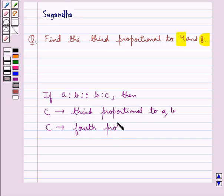Also, C would be called the fourth proportional to A, B, and B. This is the key idea for this question.